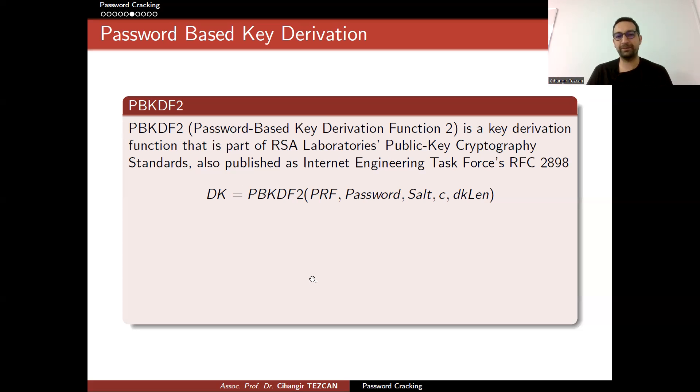It is a key derivation function that is part of RSA Laboratories' Public-Key Cryptography Standards, also published as Internet Engineering Task Force's RFC 2898. This desired key is provided by this function, and the inputs are a pseudorandom function like a hash function, your password, salt, c is the number of hash operations you are going to use. This pseudorandom function is repeated c times. dk_len is the length of your desired secret key. If you are going to use AES-256, your desired key length will be 256 bits. But if you are going to use RSA, you will probably choose something larger than 3000 bits.